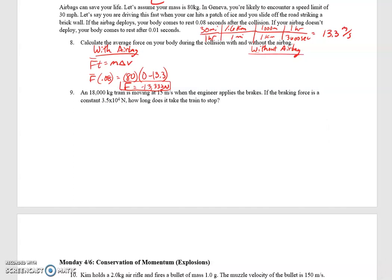Without the airbag, time is 0.01 seconds, 80 kg, you still come to rest, so final velocity is zero and your initial velocity is still 13.3. That gives you an average force eight times larger, so 106,400 newtons. Significantly more force on your body.